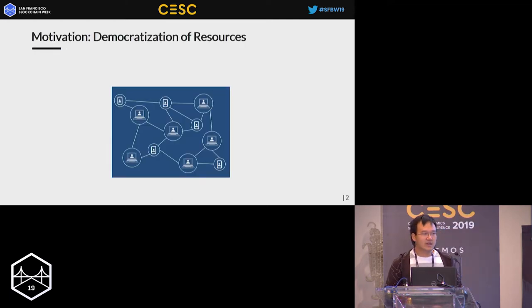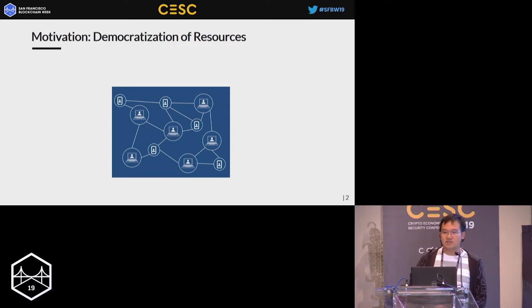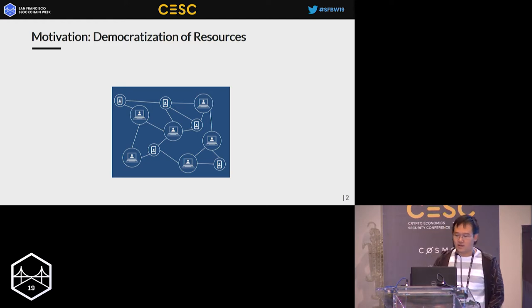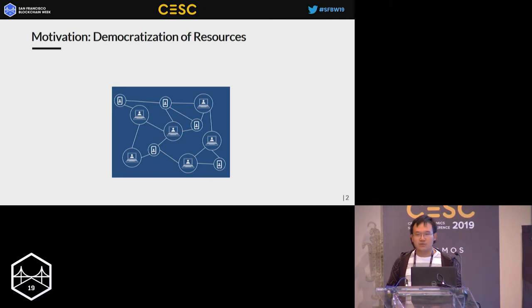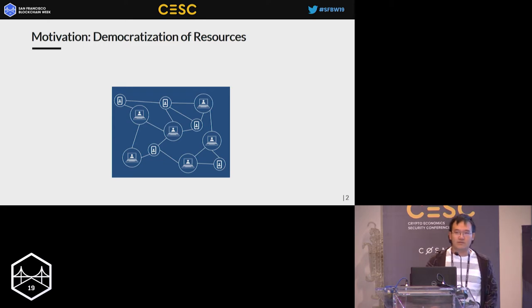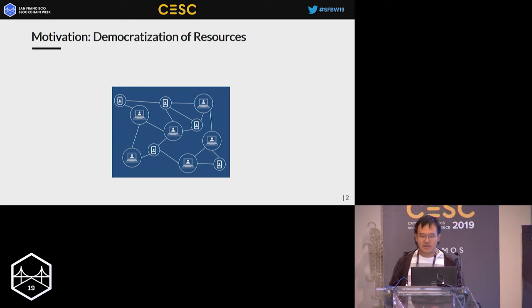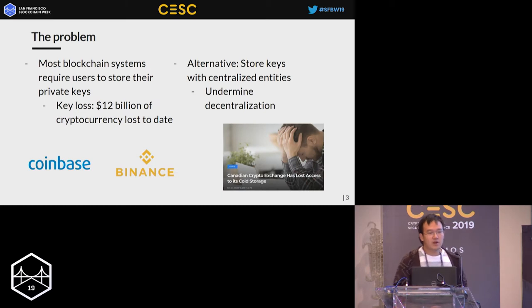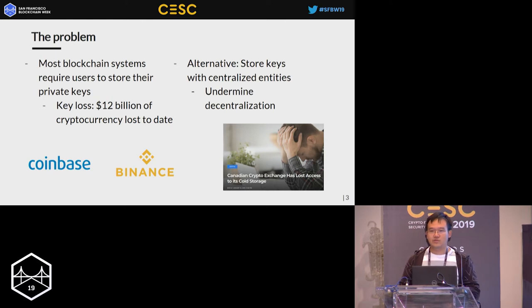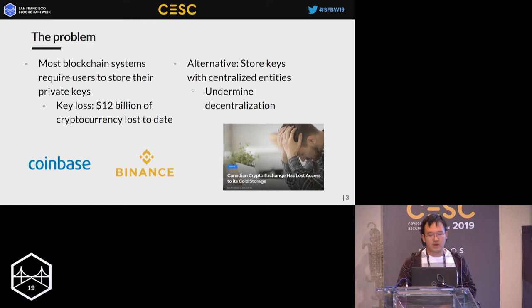Decentralization is widely seen as a very important step in the democratization of resources, and this is largely facilitated by the rise of blockchain systems in the past decade. These blockchain systems are used in various applications. The most well-known is cryptocurrency, and some others include voting systems and identity management systems. But the common thread across all these applications is the requirement that a user needs to manage their own private key.